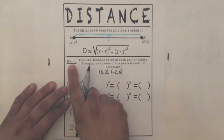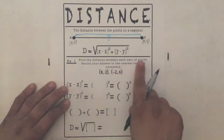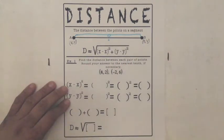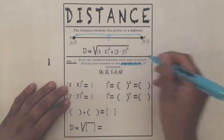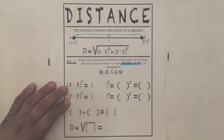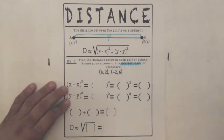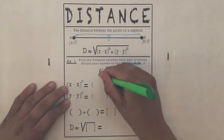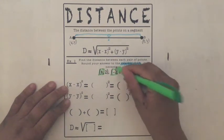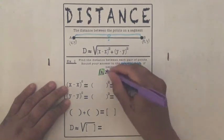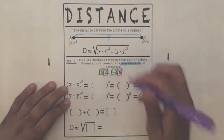So example one says find the distance between each pair of points, round your answer to the nearest tenth. We got to remember that, the nearest tenth, if necessary, right? Only if necessary. So again, our X's are in green and our Y's are in purple.